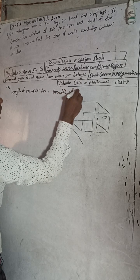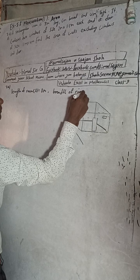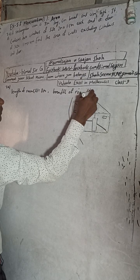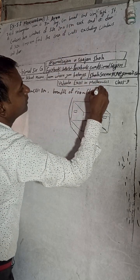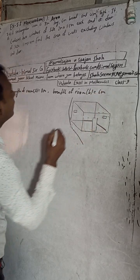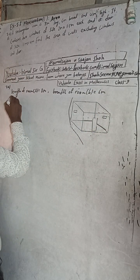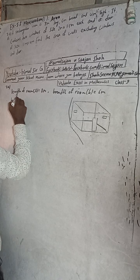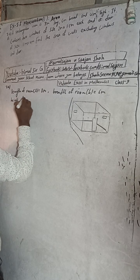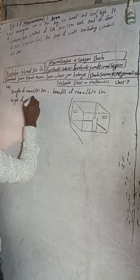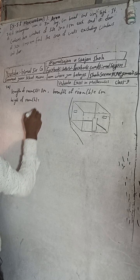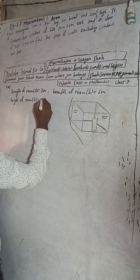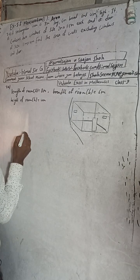And height of the room, height of room H is equal to 4 meters. Now length, this is our length, this is breadth, and this is our height.